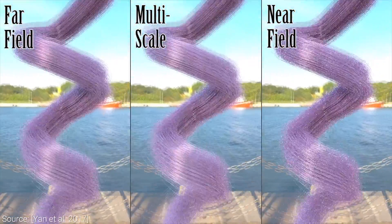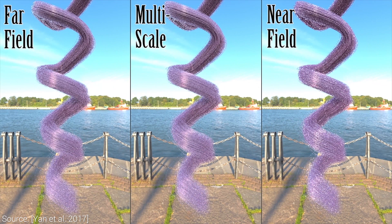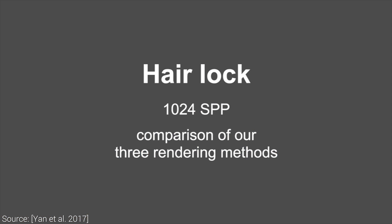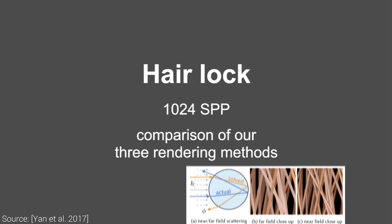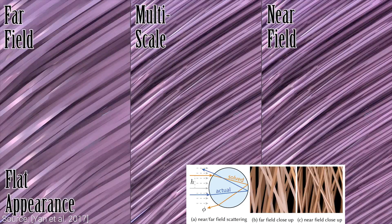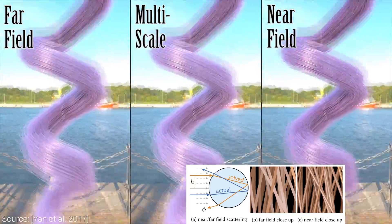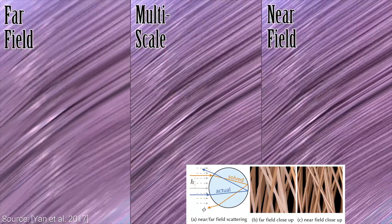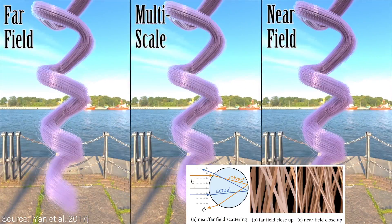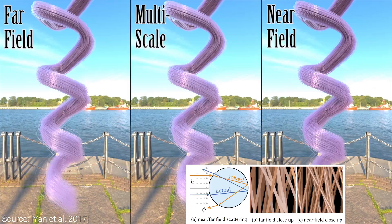The main selling point is that this work introduces a multiscale model for rendering hair and fur. This means that it computes near and far-field scattering separately. The far-field scattering model contains simplifications, which means it's way faster to compute. This simplification is sufficient if we look at a model from afar, or we look closely at a hair model that is way thinner than human hair strands. The near-field model is more faithful to reality, but also more expensive to compute.